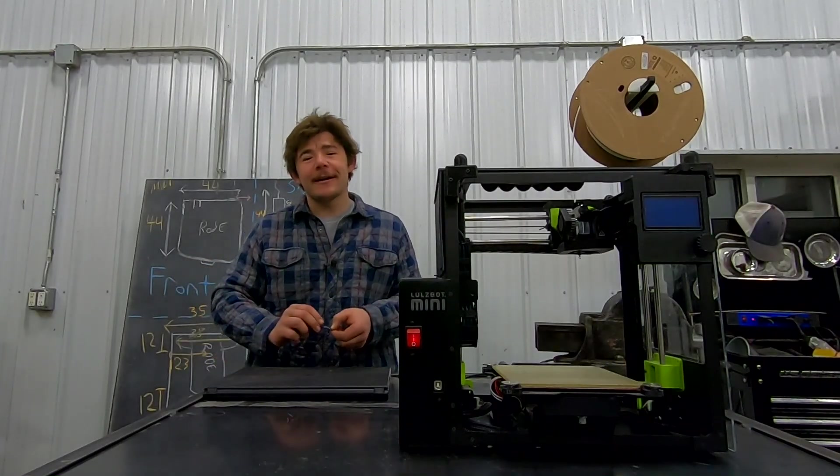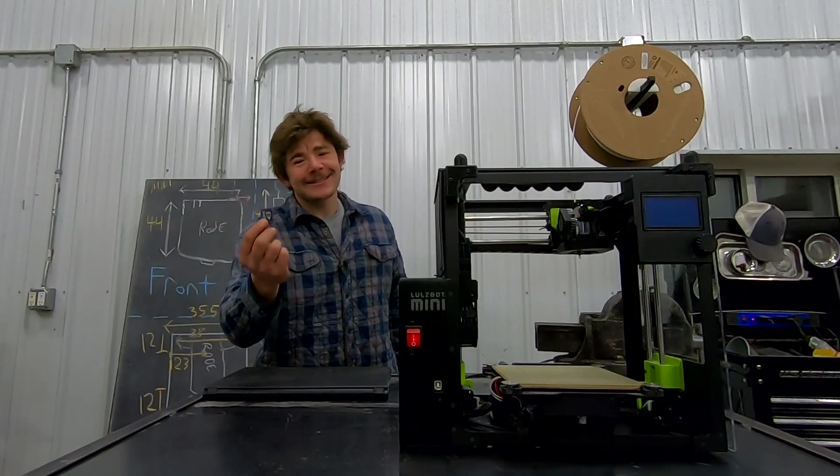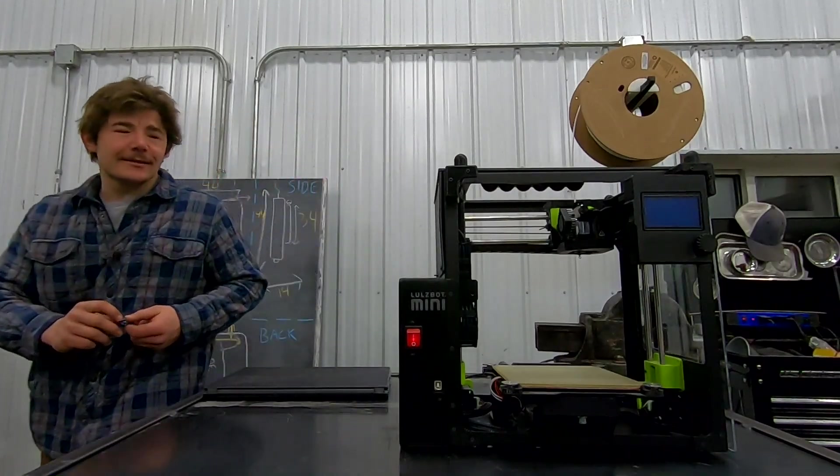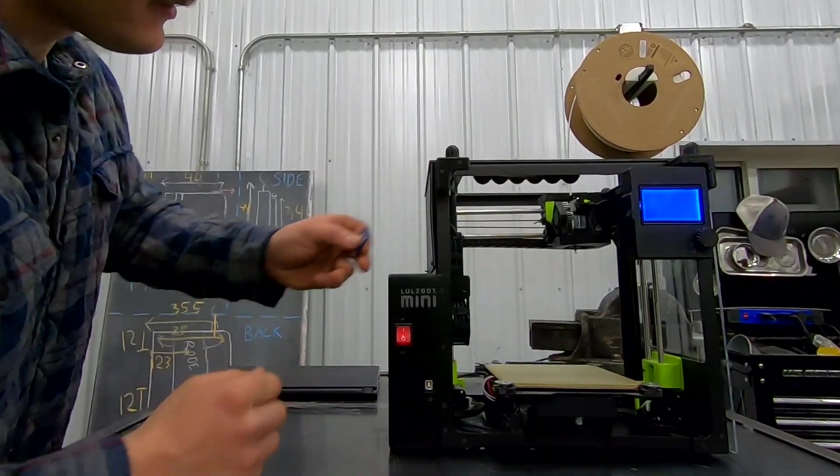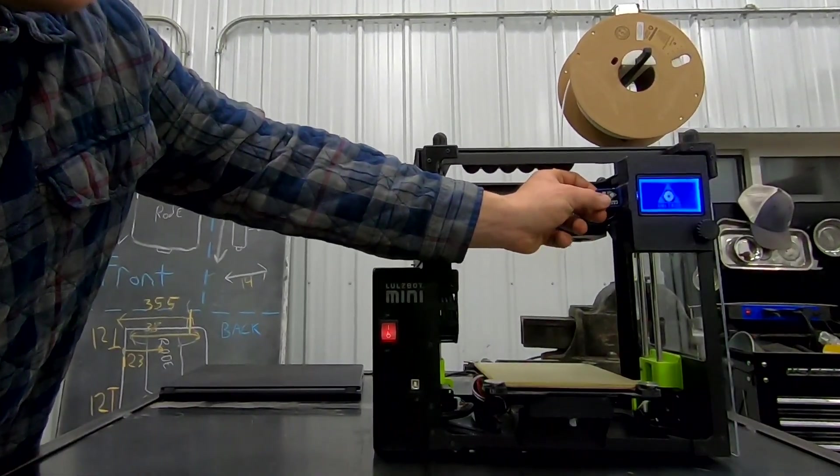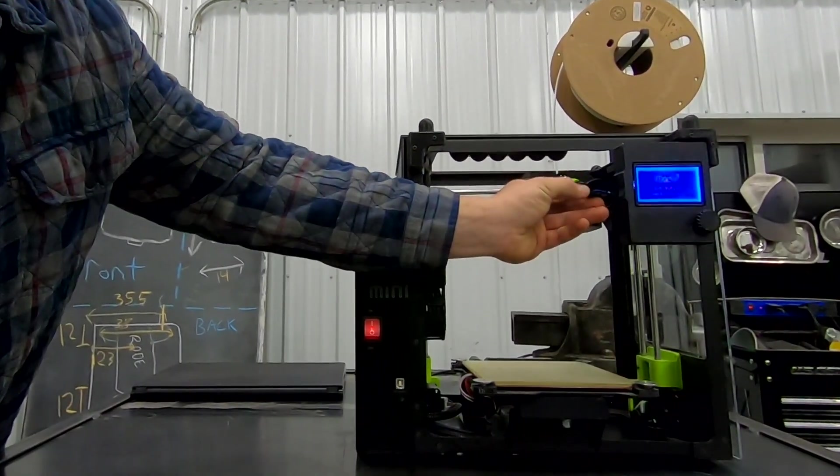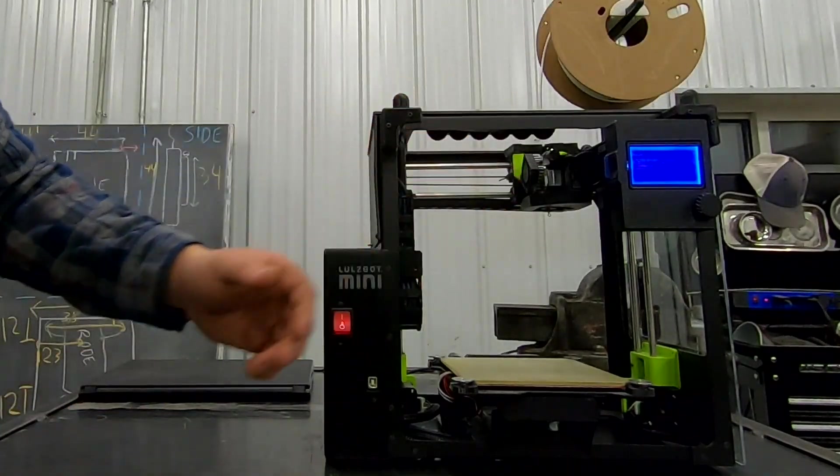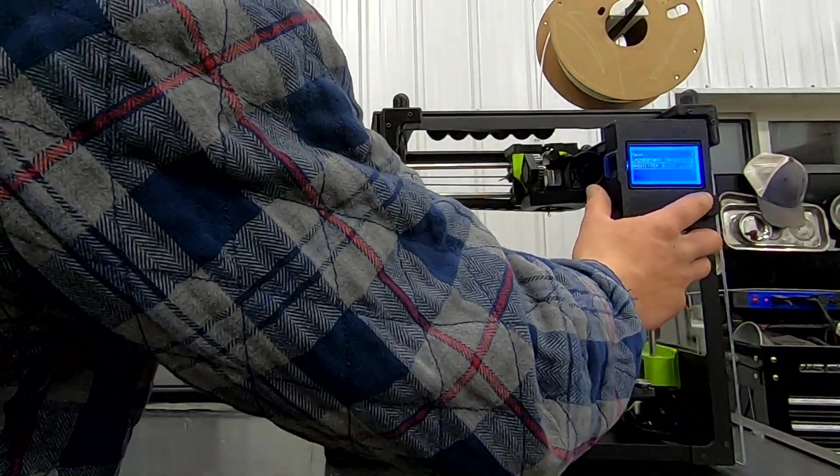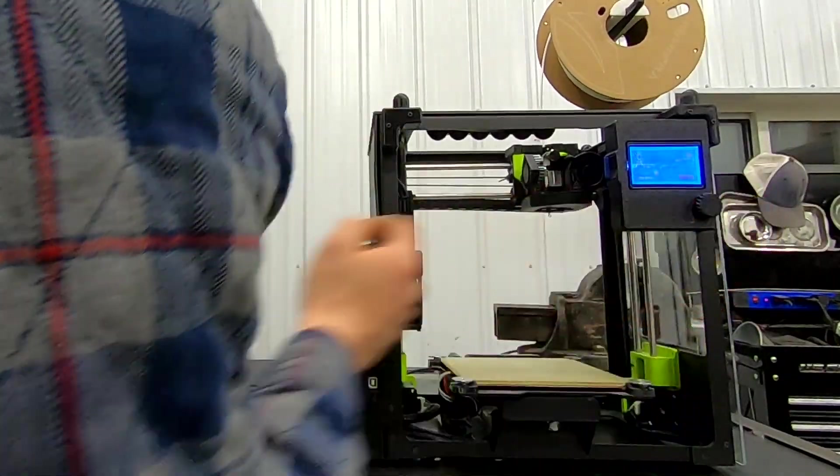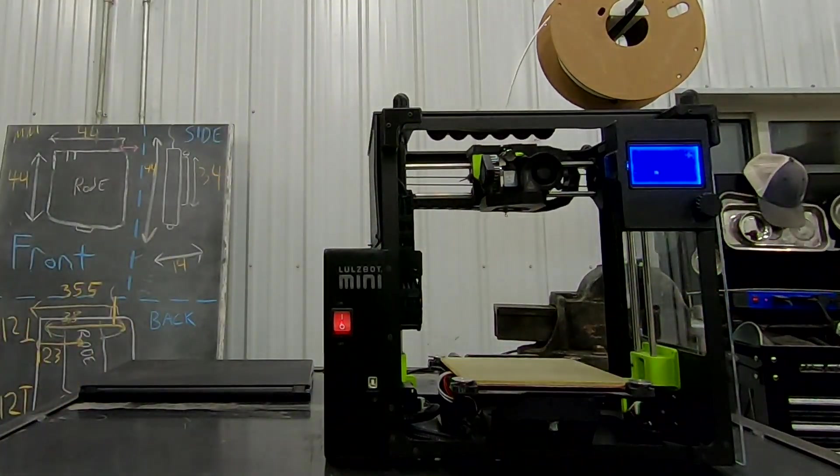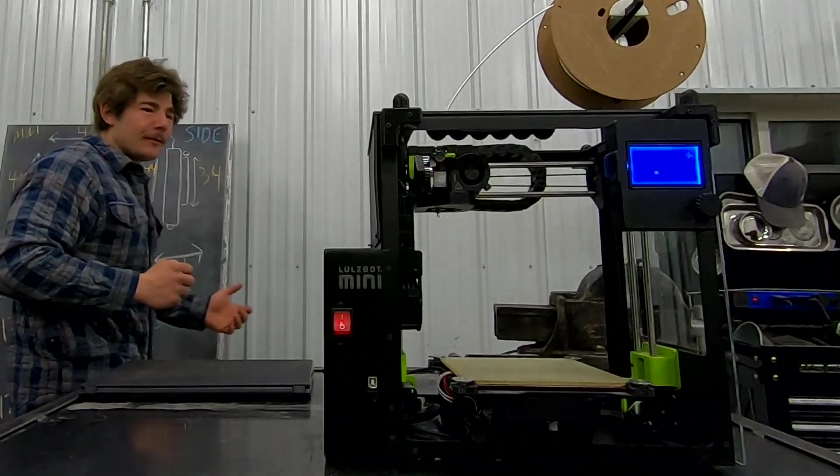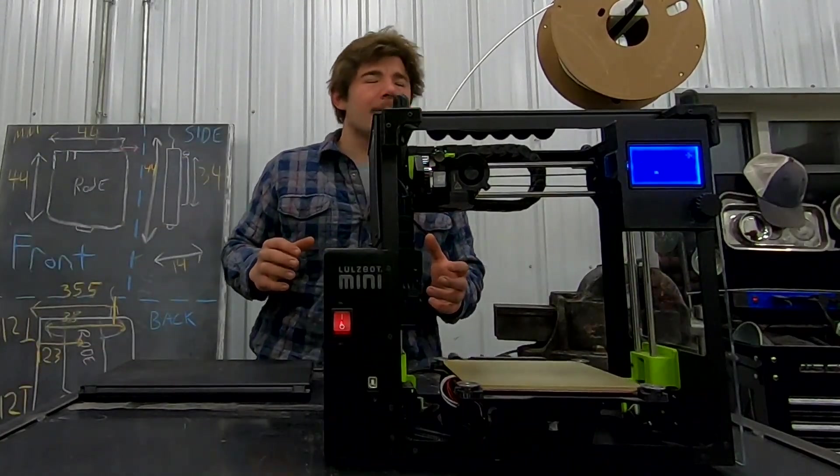There we go. We got that STL file into a G-code, and it is sliced in this SD card. So now all we have to do is just come over here and turn the printer on, and we're going to insert our SD card. So now that I have the SD card inserted, I can just print straight from the media. Click that button, print. Now, as you can see, the machine's booting up. It's going to start heating up that hot end.